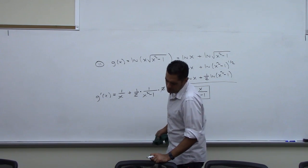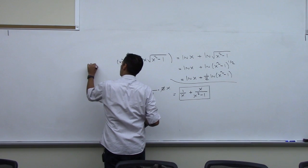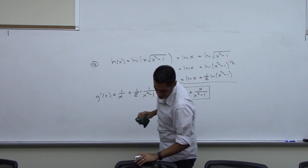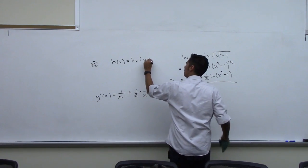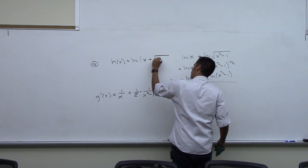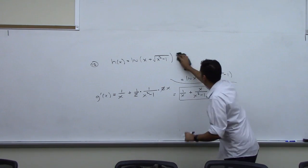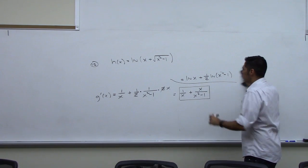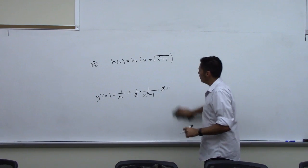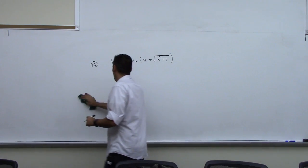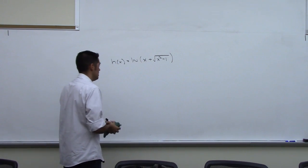Alright, let's compare that to number 12. H of x equals natural log of x, and instead of times here they have plus square root of x squared minus 1. This is a good problem illustrating the fact that I can't do the algebra that I did on the previous one, because that's addition inside of a log. There is no property of logs that allows me to split this up, so I've just got to attack it as it is.